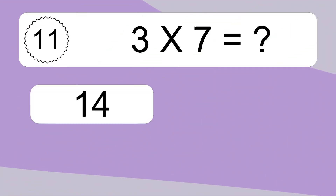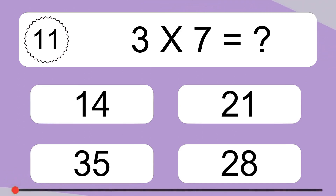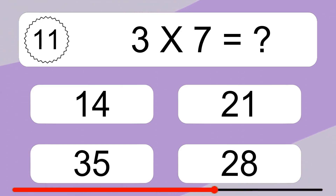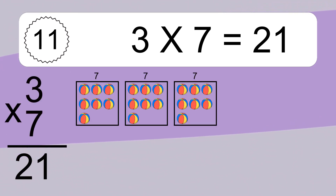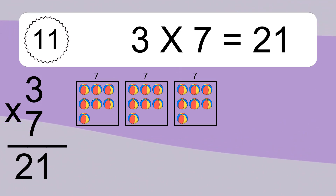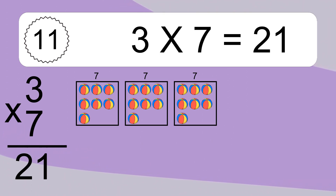Three times seven equals what? Three times seven equals twenty-one. We have three boxes, and each box has seven colorful balls inside. If you count all the balls in all the boxes together, you will have three times seven balls. This equals twenty-one balls.